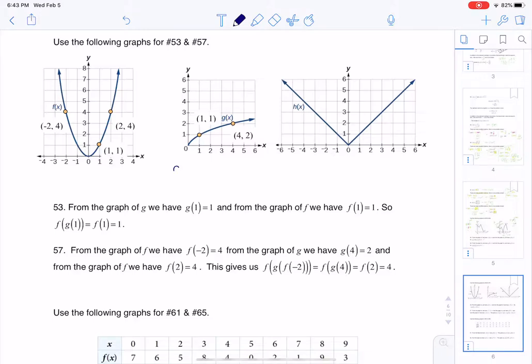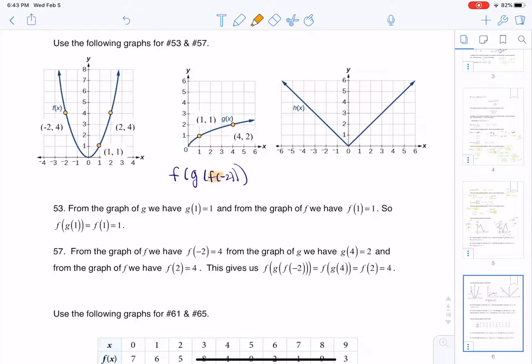We are asked to find f of g of f of negative 2. So there's a lot in there. So what I want to do is start with just f of negative 2. Let's just find the innermost parentheses.